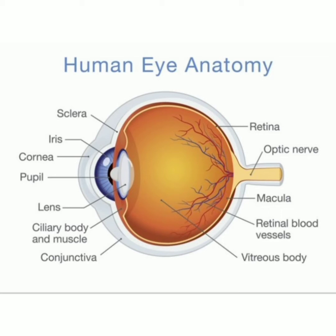Now I will tell about the main points of eye structure and function. To understand how the eye sees, it helps to know the eye structure and functions. Light enters through the cornea, the transparent outer covering of the eye.